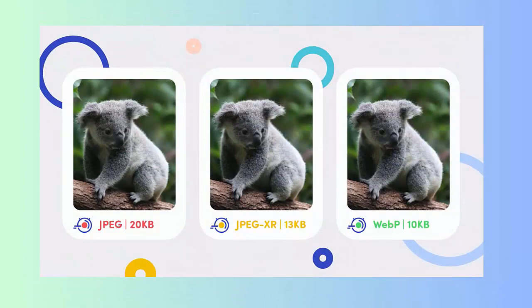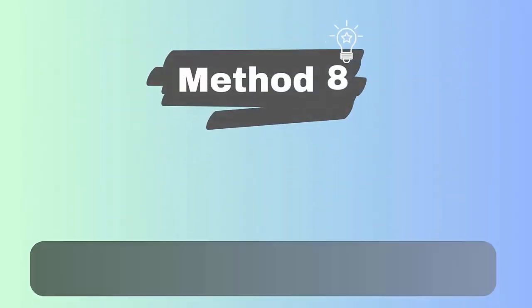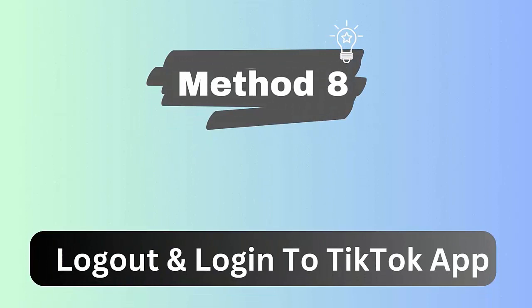Method 7: Decrease your photo size. You should always check the size of slideshow photos. Make sure they are not very large, as the slideshow may not work properly if the pictures are big. Reduce the size and then check if everything is fine.